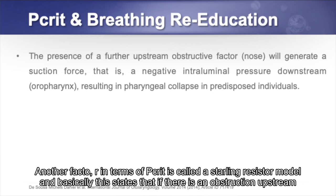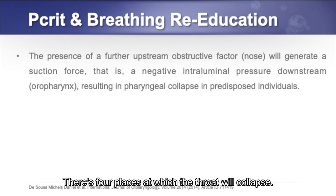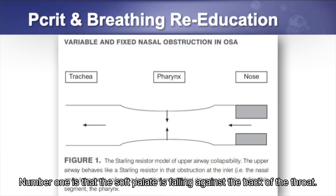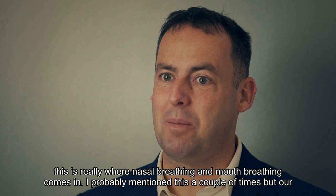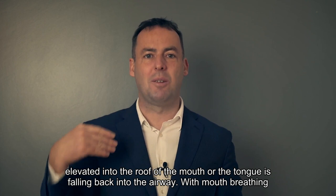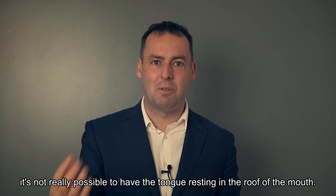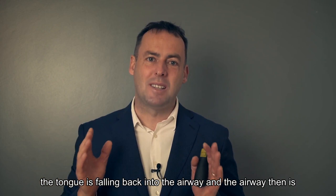Another factor in PCRIT is the Starling resistor model: an upstream obstruction — for instance, a stuffy nose — causes increased negative pressure downstream, making the throat more likely to collapse. There are four collapse sites: the soft palate falling against the back of the throat, the tongue falling back into the airway, the epiglottis falling back, and the throat itself collapsing. This is where nasal versus mouth breathing matters — the tongue has two places to be: resting in the roof of the mouth, or falling back into the airway. With mouth breathing, the tongue falls back, the airway is anatomically narrower, and it's more predisposed to collapse.